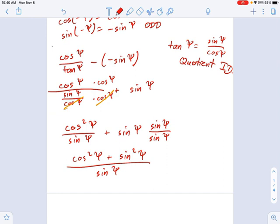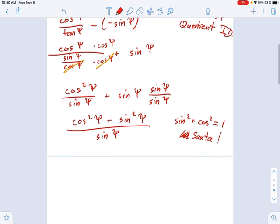Which, if you remember your Pythagorean identity, sine squared plus cosine squared is 1. Remember, Santa Claus. So on this one, now I simplify the top to just the number 1, divided by sine psi.